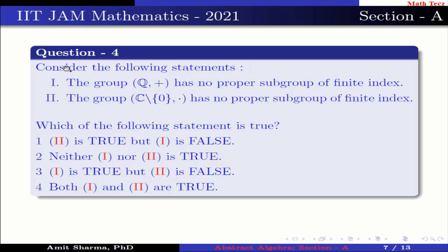Question number 4: Consider the following statements. Statement 1: The group Q under addition has no proper subgroup of finite index. Which of the following statements is true? Option 1: 2 is true but 1 is false. Option 2: Neither 1 nor 2 is true. Option 3: 1 is true but 2 is false. Option 4: Both 1 and 2 are true.